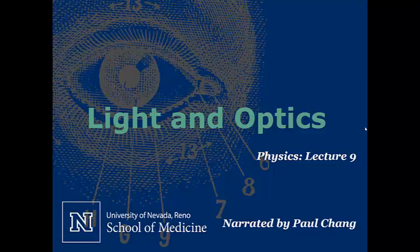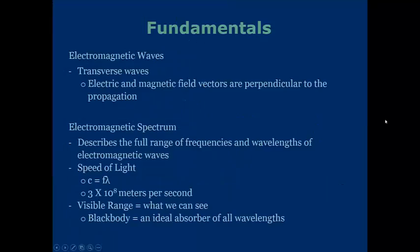Physics Lecture 9, Light and Optics. Let's start with the fundamentals. Electromagnetic waves are stated as transverse waves. This is because the electric and magnetic field vectors are perpendicular to the propagation. The electromagnetic spectrum defines and describes the full range of frequencies and wavelengths of electromagnetic waves.